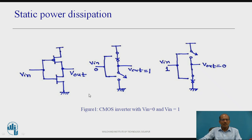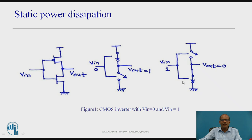Now let us understand Static Power Dissipation in detail. This is a CMOS Inverter which consists of PMOS and NMOS; this is the input and this is the output. When input is equal to 0, PMOS is in on state and NMOS is in off state, therefore output is equal to logic 1, meaning output is connected to VDD. When input is equal to 1, PMOS is in off state and NMOS is in on state, therefore output is equal to 0, which is connected to ground.